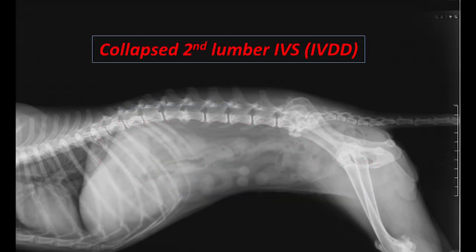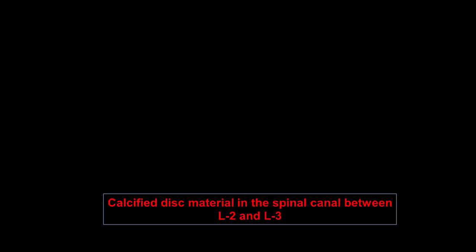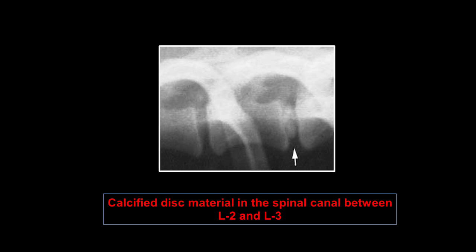In this x-ray there is a collapsed intervertebral disc between T13 and L1. Here you can see the intervertebral disc is collapsed. This shows a calcified disc in the spinal cord between L2 and L3.